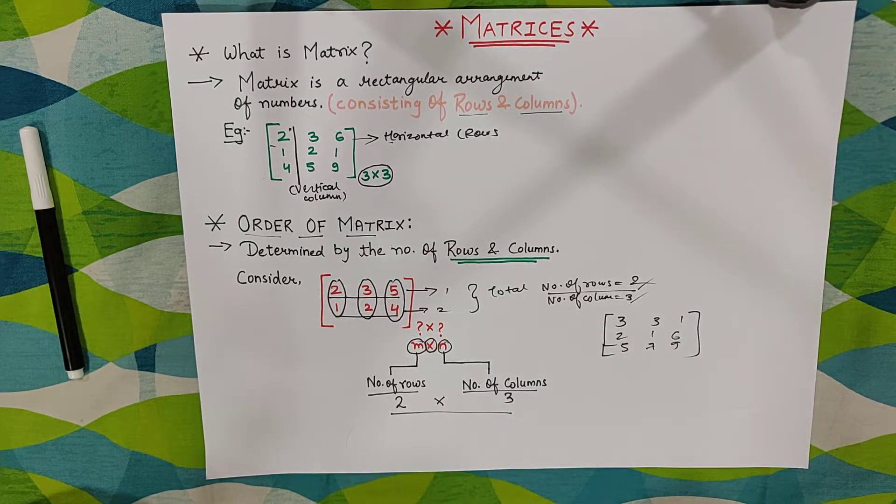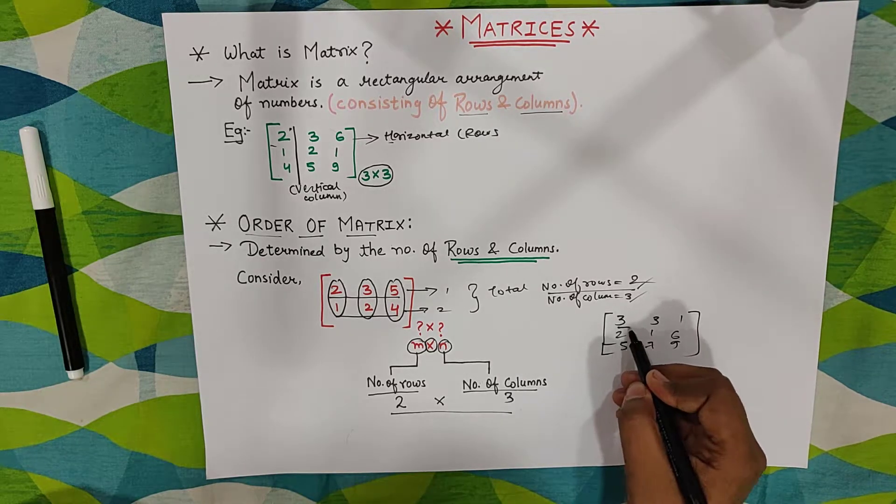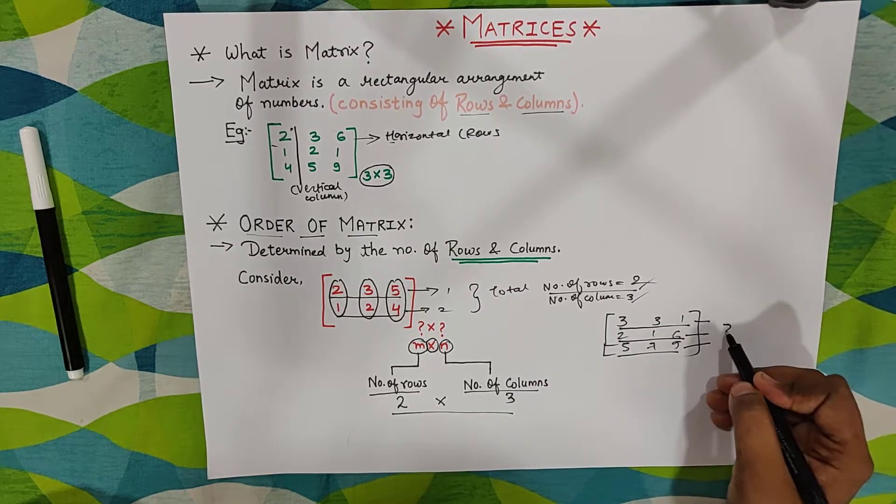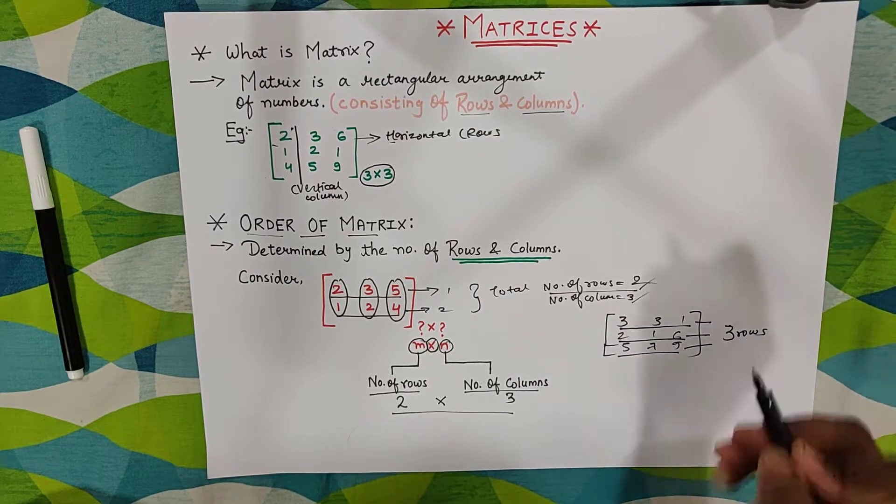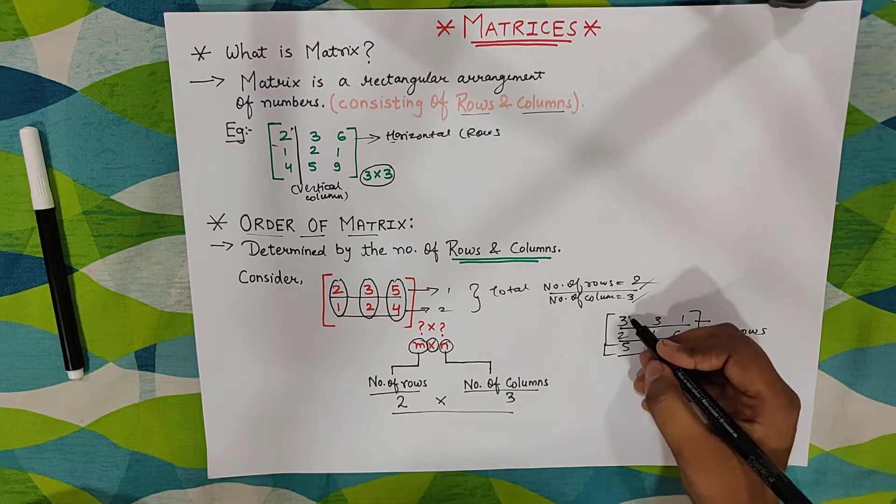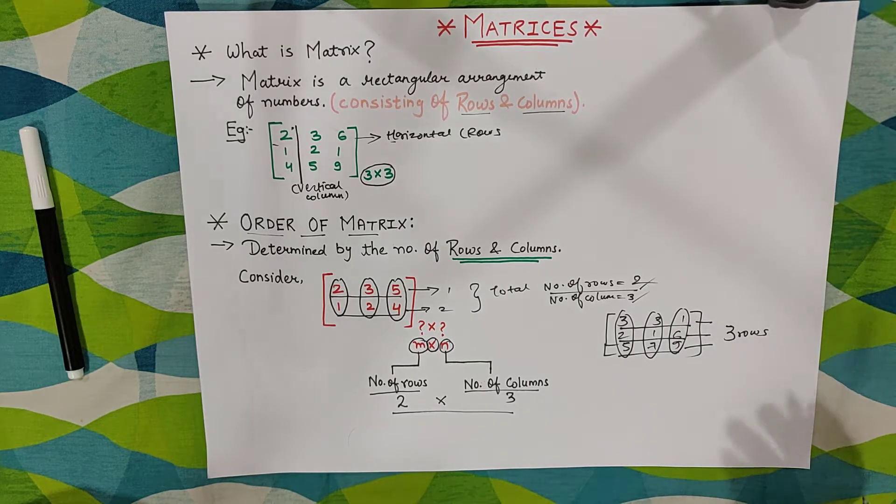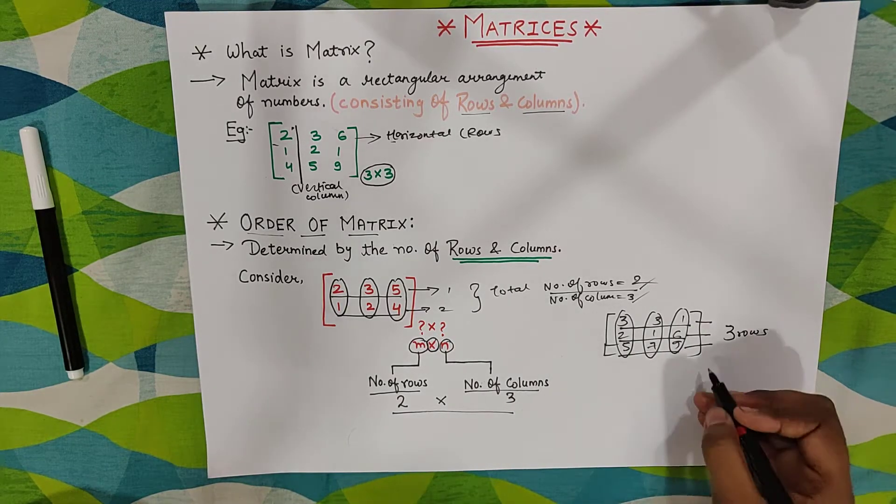We need to identify the order of this matrix. How to do it? How many rows guys? 1, 2, and 3. I can see there are total three rows. What about columns? We have one column, two column, and three column. I got the rows, I got the columns. Now how to write it?